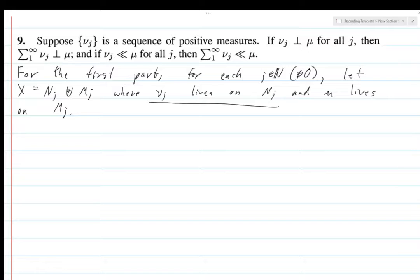I mean that if you give me any subset of its complement M_j then nu of that subset of M_j will be 0 and conversely for mu. So we've got all these decompositions of X with respect to the nu_j's.